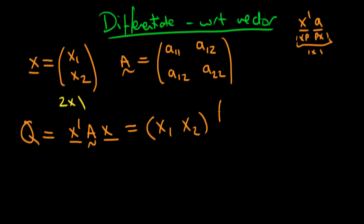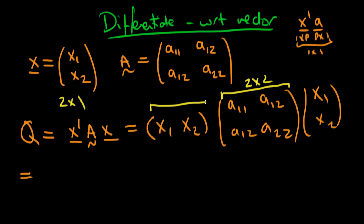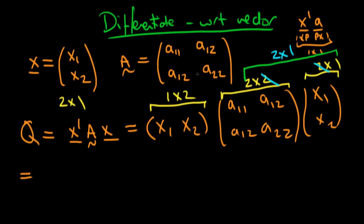This is just x1, x2 times our matrix A — A11, A12, A12, A22 — times our original vector x. The thing in the middle is 2 by 2, this is 1 by 2, and this is 2 by 1. It looks complicated but we can simplify by considering things in pairs. A 2 by 2 matrix multiplying a 2 by 1 vector — the two inner indices cancel — yields a 2 by 1 product.